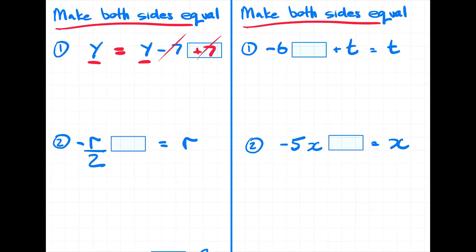Example number two, I've got a negative r divided by two. Most students would want to just multiply by two, eliminating those two. But if you look, we don't have both sides equal, because on the left I've got a negative r, and on the right I have a positive r. So what we want to do is multiply by a negative two. By multiplying by a negative two, it's going to cancel that two and also cancel that minus sign, leaving us with both sides equal at r equals r.